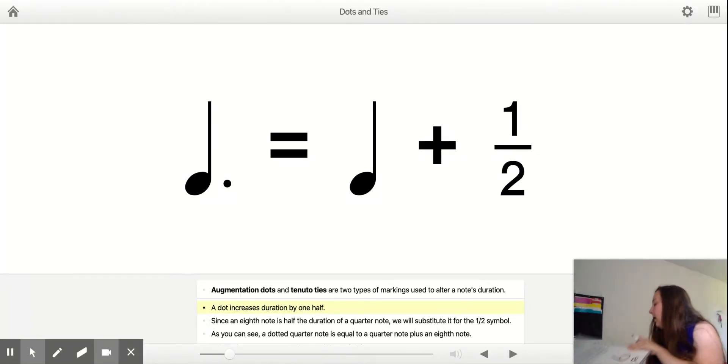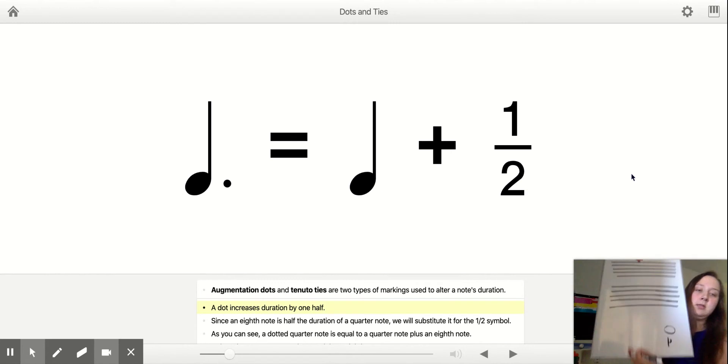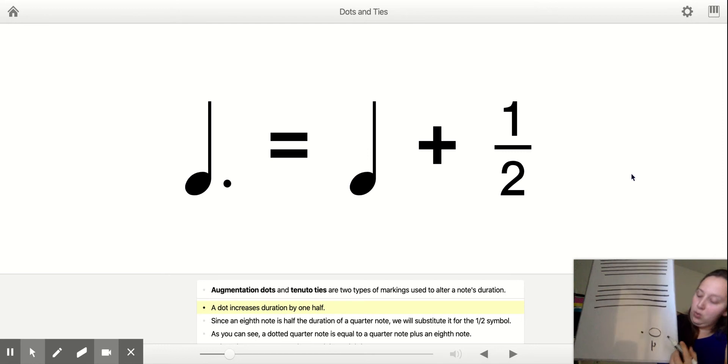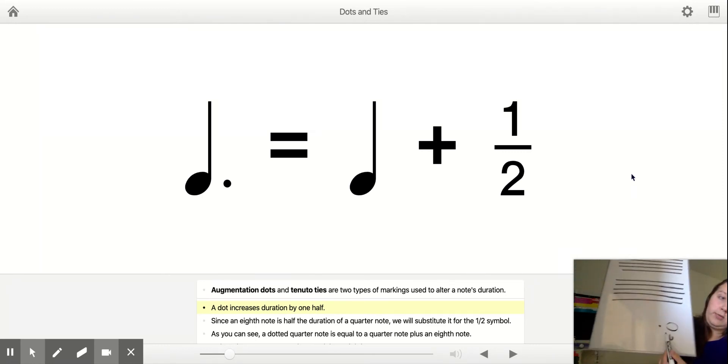Okay, if I had a different note value, let's say I had a whole note, which in 4-4 time is 4 beats, and I added a dot, the dot would not be 1 in this case, the dot would be half of whatever this one is. So this is 4, half of 4 is 2, so my dot is 2. 4 plus 2 equals 6.